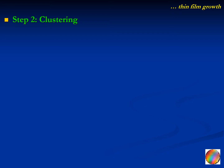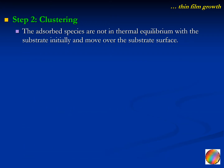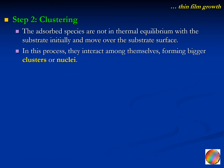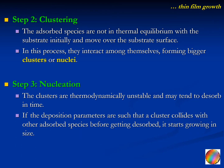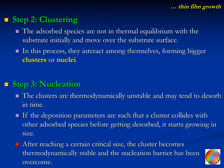In the second step, the adsorbed species are not in thermal equilibrium with the substrate initially and move over the substrate surface. In this process they interact among themselves, forming bigger clusters or nuclei. The third process is nucleation: the clusters are thermodynamically unstable and may tend to dissolve. If a cluster collides with other adsorbed species before getting dissolved, it starts growing in size. After reaching a certain critical size, the cluster becomes thermodynamically stable and the nucleation barrier has been overcome.